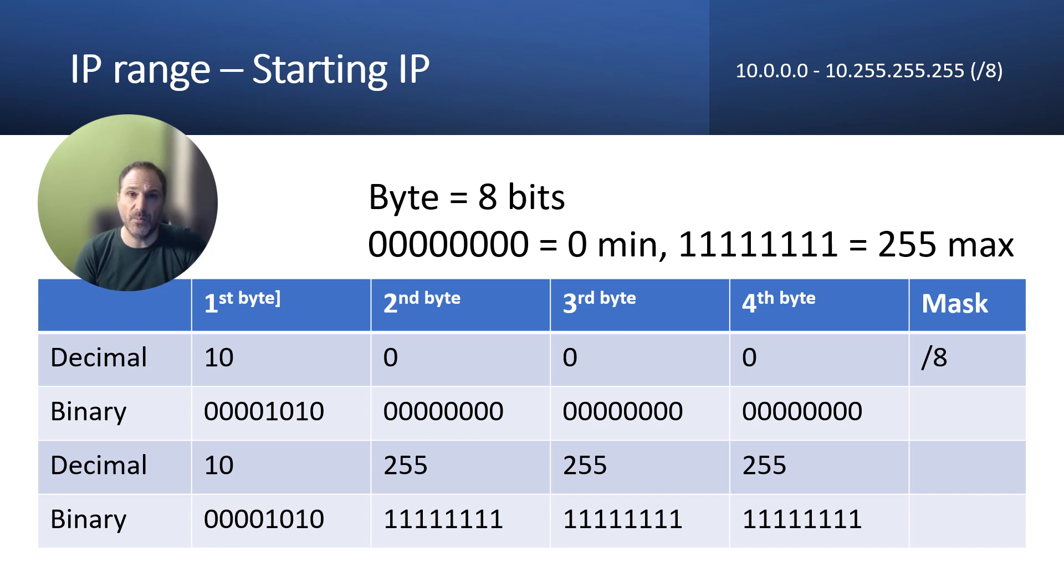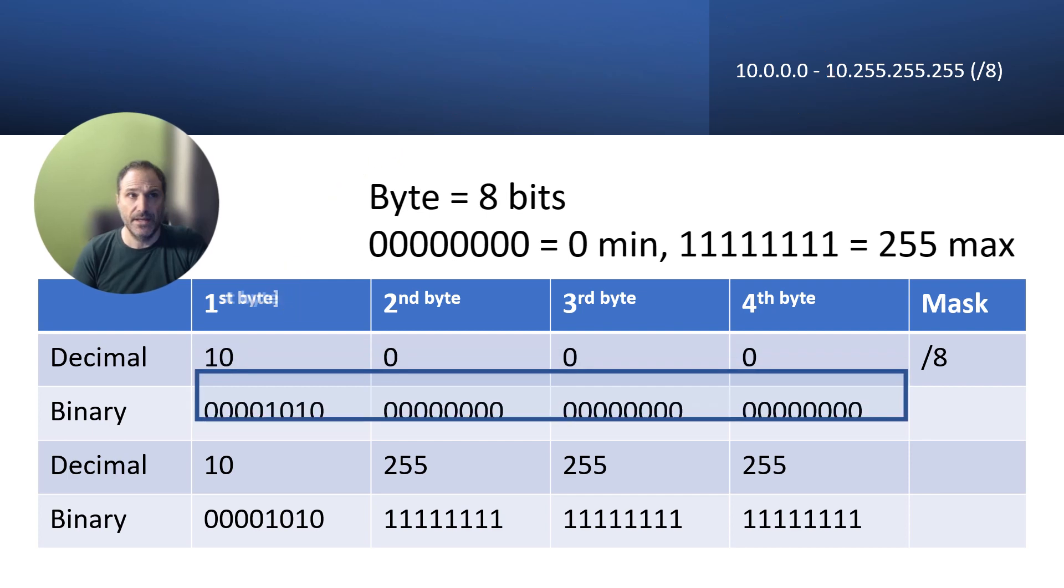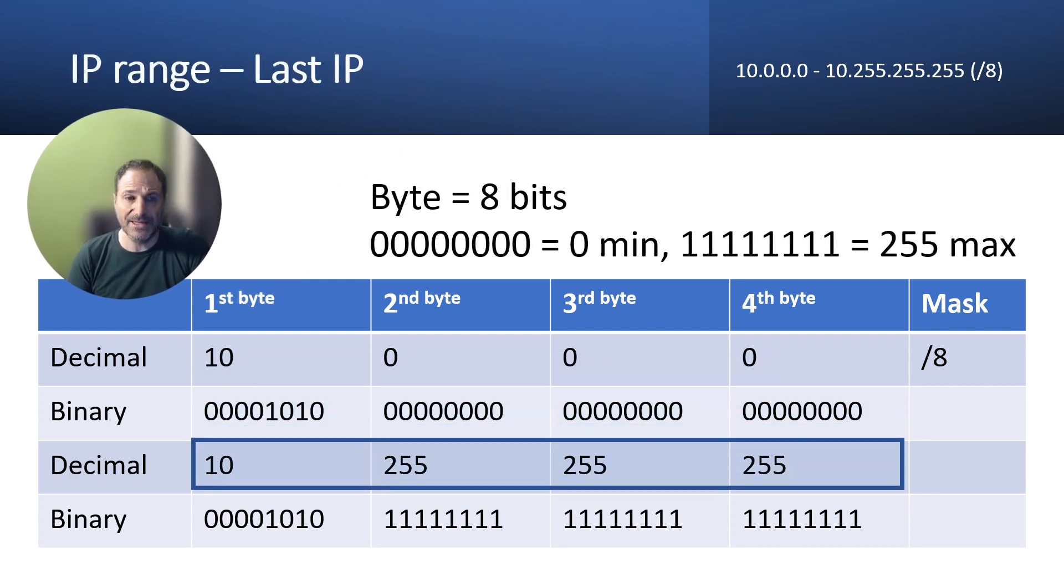Let's use the starting IP as an example. This is your starting IP and how it fits on the four octets in binary. If you look at the last IP, you can see how it fits now with our representation in decimal. You see 10, 255, 255, 255.